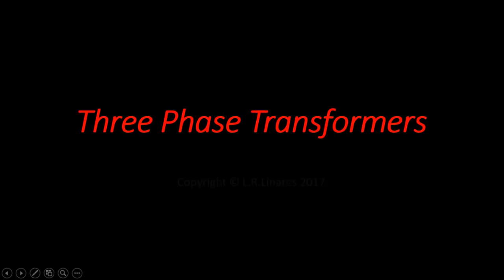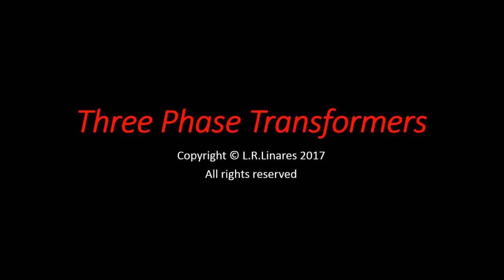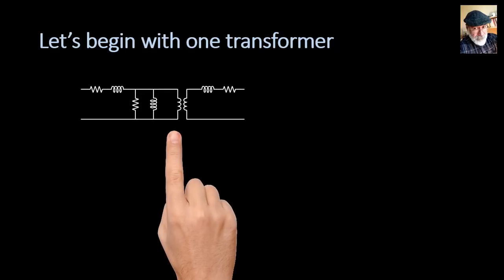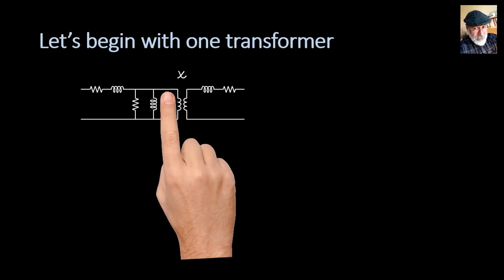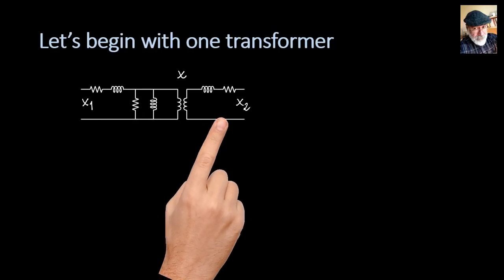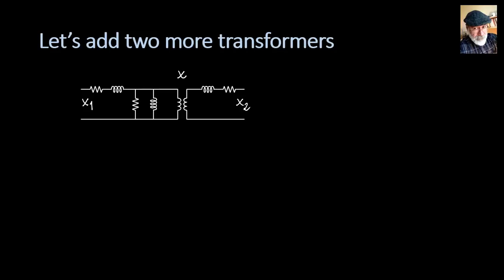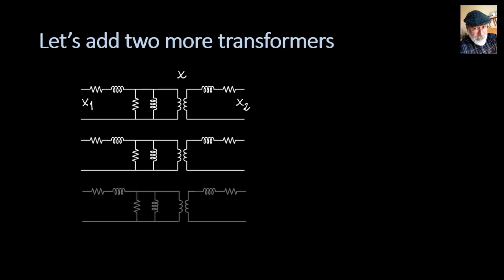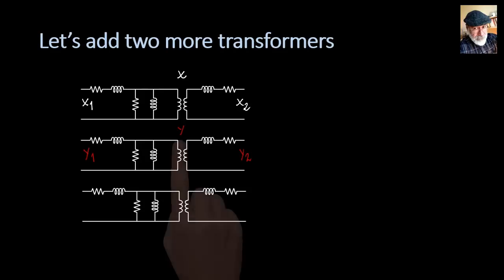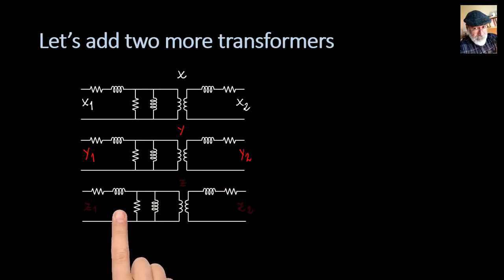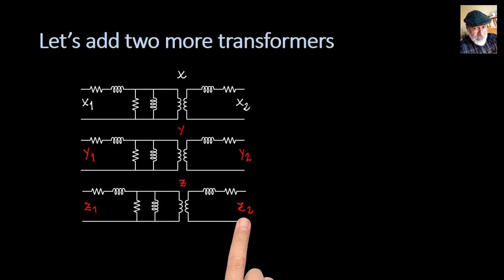Let's talk about three-phase transformers. We begin with one transformer — let's call that transformer X, with primary X1 and secondary X2. Let's add two more identical transformers: transformer Y with primary Y1 and secondary Y2, and transformer Z with primary Z1 and secondary Z2.